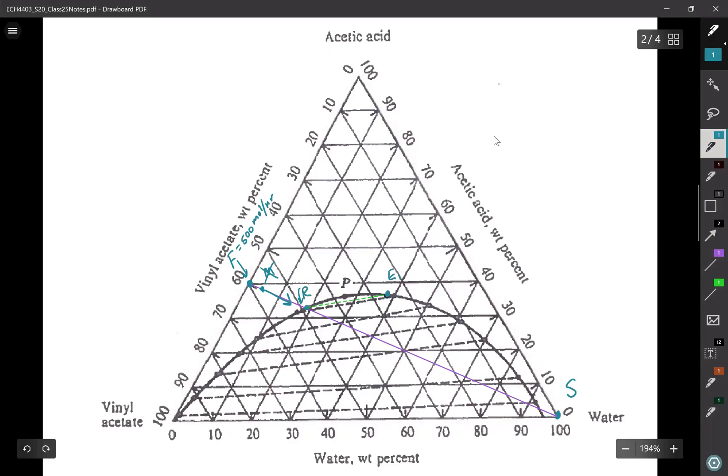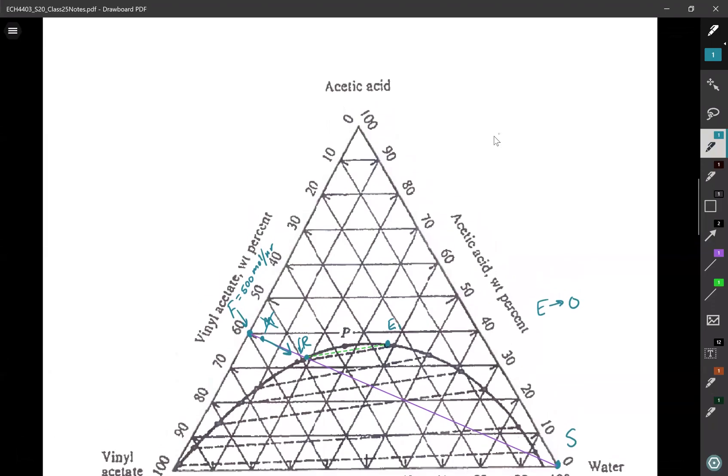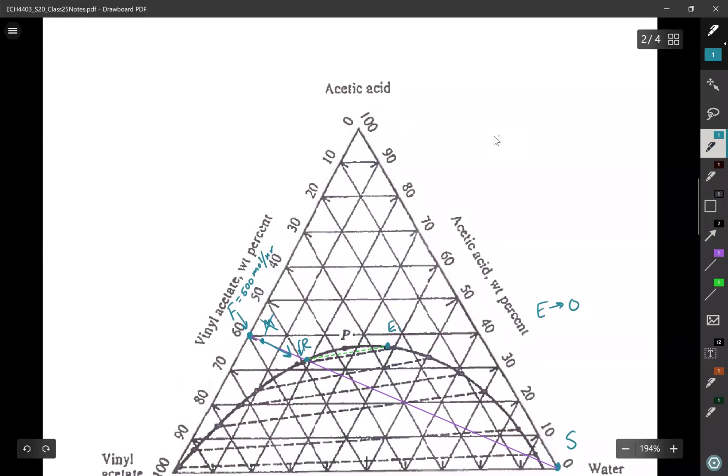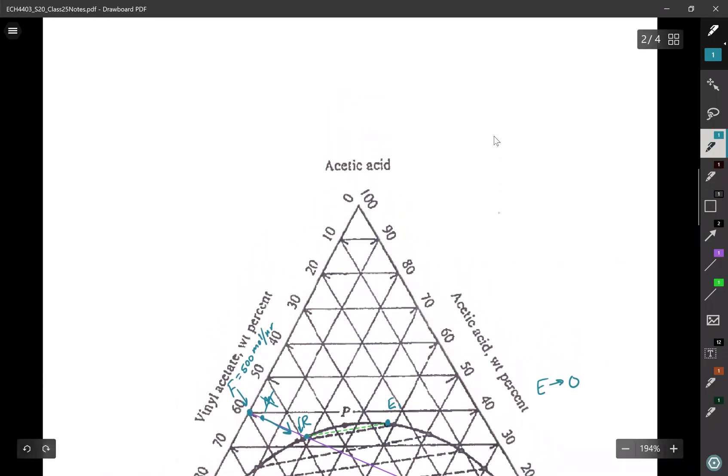And I could still figure out what my extract phase and my raffinate phase. Of course, the raffinate would be about the same as the mixing point. And in this case, extract would be very small. So extract is about zero in this case if I had the minimum amount of solvent. But still figuring out what the minimum amount of solvent is can be useful for doing an evaluation-type problem, because it at least gives you some idea of what the limits of your problem are.